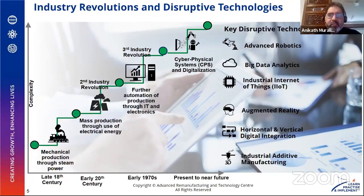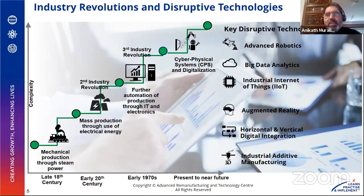The fourth industrial revolution, Industry 4.0 as it's sometimes called, which is what we're going to talk about today, is the transition to what we call cyber-physical systems — putting together the virtual world and the physical world. On the right of the slide you can see some key disruptive technologies that are options you can look at for your digitalization.